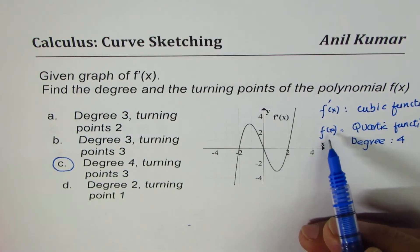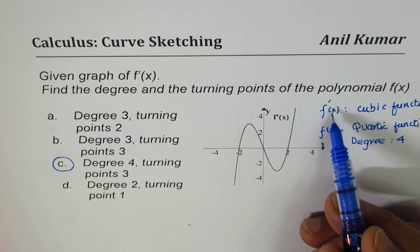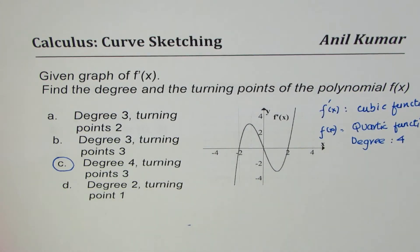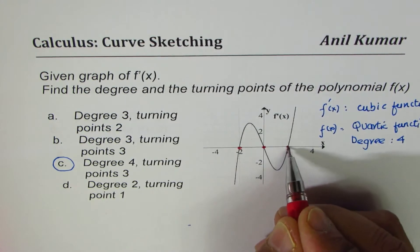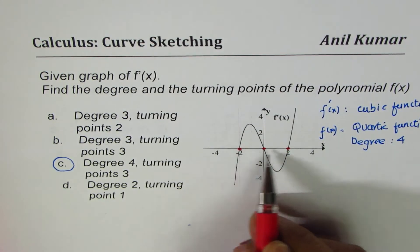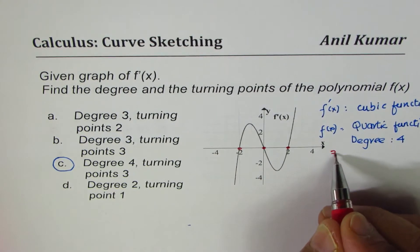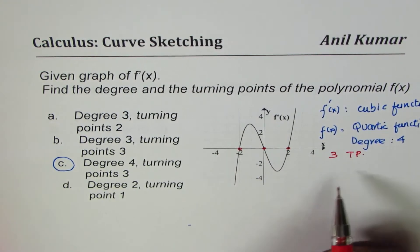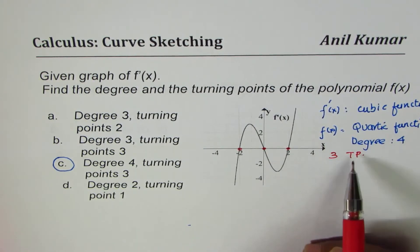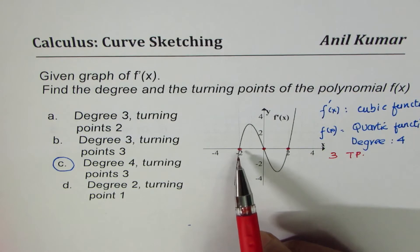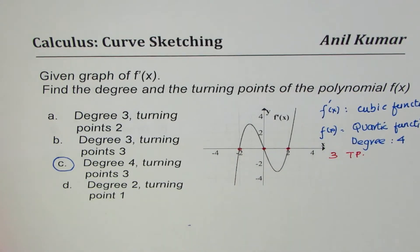The function is always one degree higher than its derivative. Turning points are at places where the derivative is zero. So the zeros of the derivative define your turning points. We have three turning points. As an added exercise, I would like you to sketch the quartic function whose derivative looks like this — that is an extension to this multiple choice question.